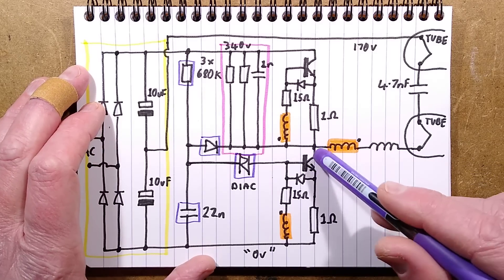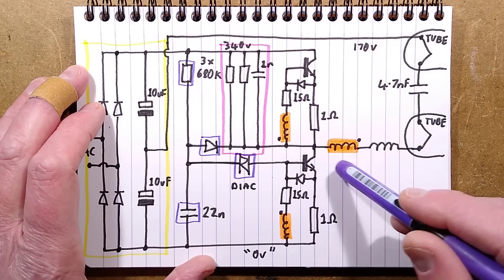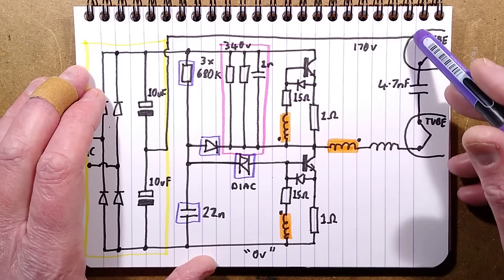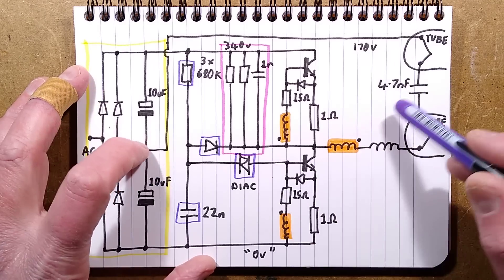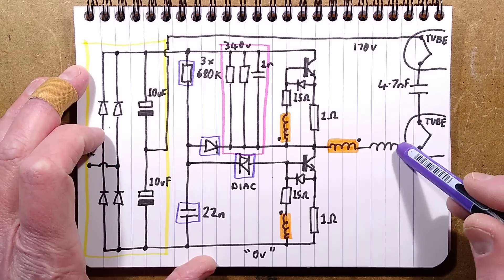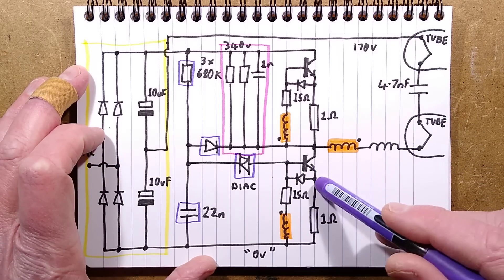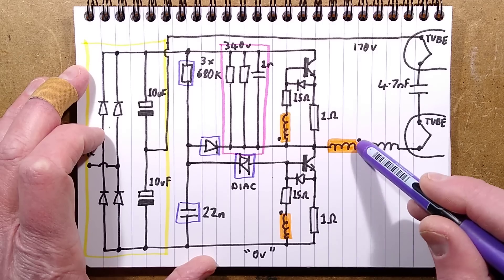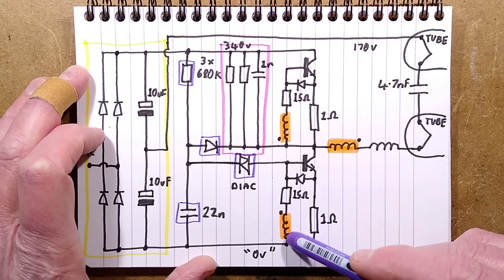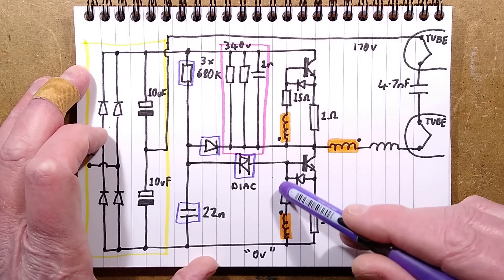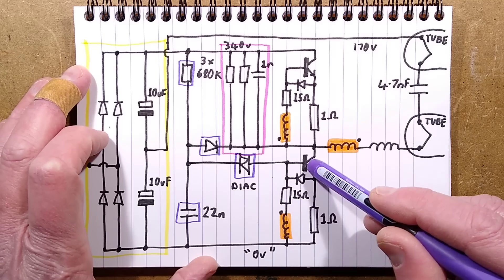When it has started and current is flowing, using conventional current flow, it's going from the midpoint of the capacitors through the tube and it's going to the 0 volt rail through this transformer and in doing so, it induces current in this transformer which then drives the base of that transistor.